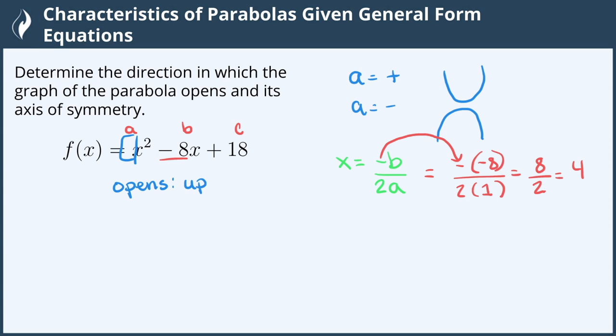And for an axis of symmetry, we need an x equals a number for the equation of the line, because it's a vertical line. So x equals a positive 4, and that's the axis of symmetry.